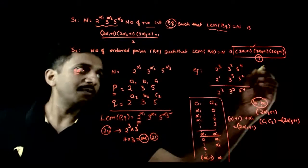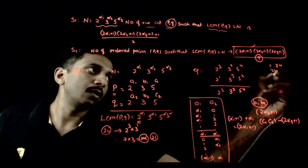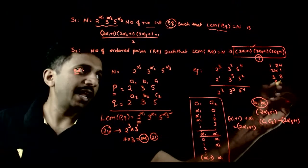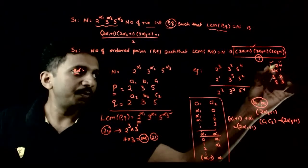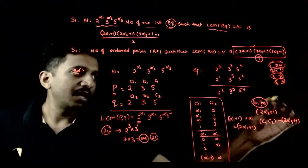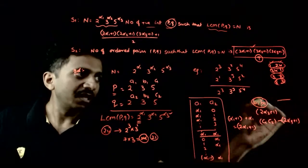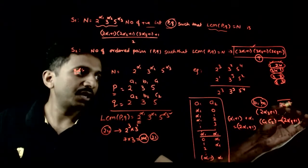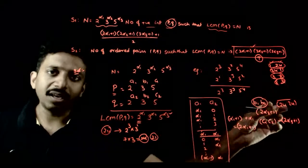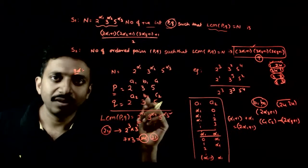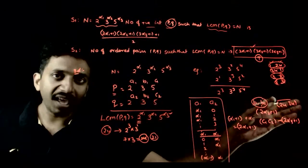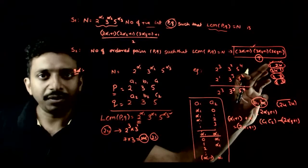For n = 24, the 21 ordered pairs include pairs like (1,24), (24,1), (3,8), (8,3), and so on. Among all these, there is exactly one case where both p and q are equal: the pair (24,24). For unordered pairs, you subtract that one special case, divide the rest by 2, then add it back: unordered pairs = (total ordered pairs − 1)/2 + 1.